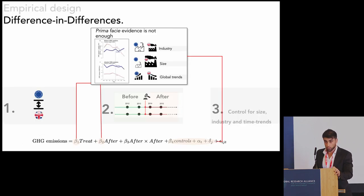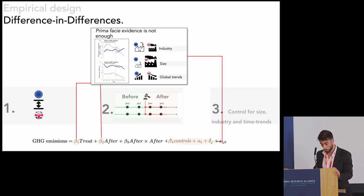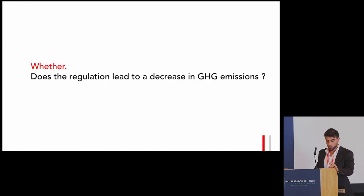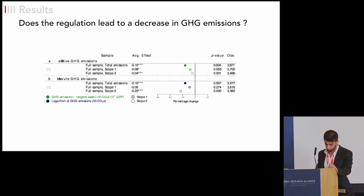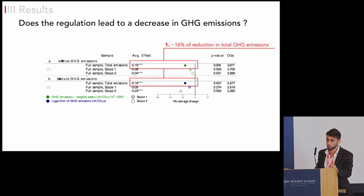To address this concern, we use a difference-in-differences specification. We look at the differential in relative or absolute emissions between European and UK firms, and compare this differential before and after the regulation. We control for size and include fixed effects such as industry fixed effects and year fixed effects. We find that following the regulation, UK firms reduced their emissions by approximately 16% relative to European firms.